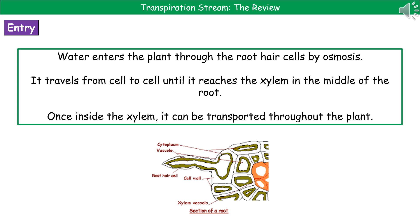If we consider how water gets into the roots in a little more detail, water is moving — and this is going to be osmosis. It gets into the plant by osmosis through the root hair cells. The root hair cells are very important because of the way they're set up — they increase the surface area, meaning osmosis will happen much quicker than if we didn't have root hair cells.